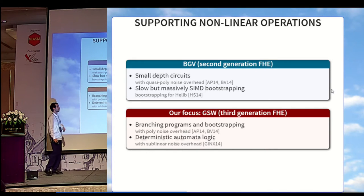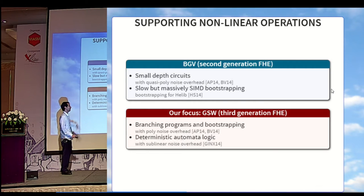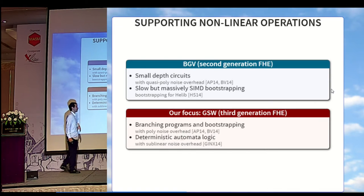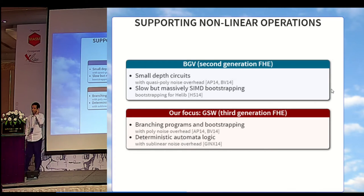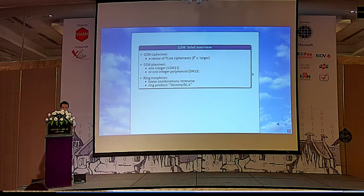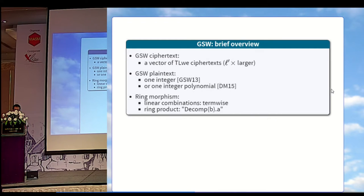We have linearity, but in order to get fully homomorphism, we need also to support nonlinear operations. Based on LWE, there are two classical constructions, BGV and GSW. In our paper, our focus was more on the GSW side, which is known to support branching program and bootstrapping, and also deterministic automata evaluation with polynomials noise overhead.